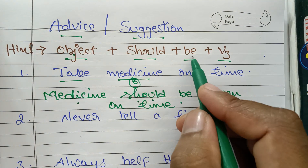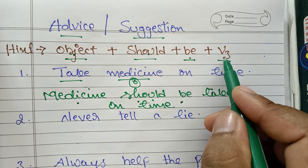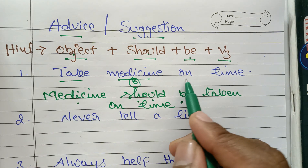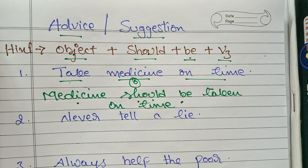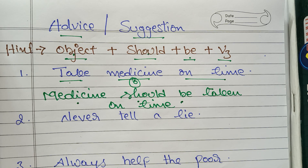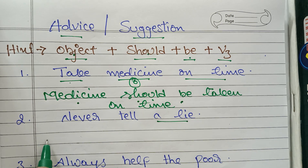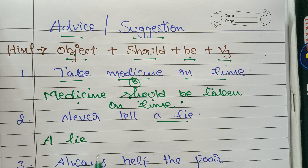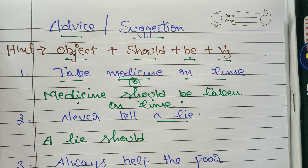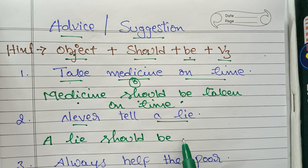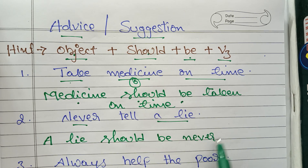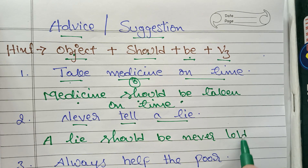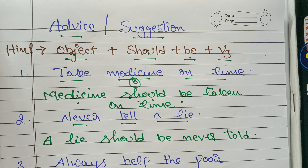So the structure is: Object + should + be + V3. Medicine + should + be + taken + on time. Second sentence: 'Never tell a lie.' Object is 'a lie.' Start with 'a lie,' then use 'should,' then 'be,' then V3 of 'tell' is 'told,' and place 'never' before 'told.' Answer: 'A lie should never be told.'